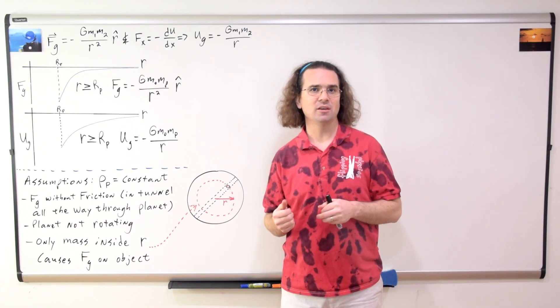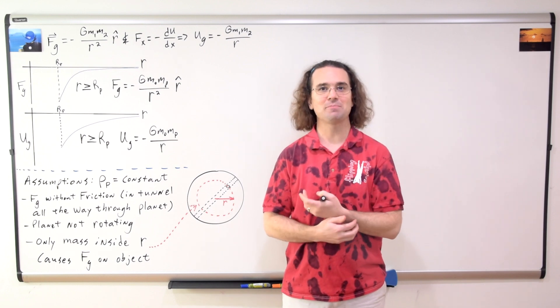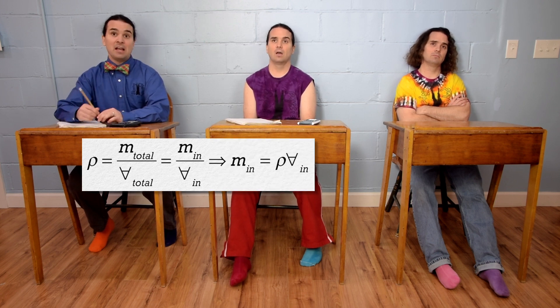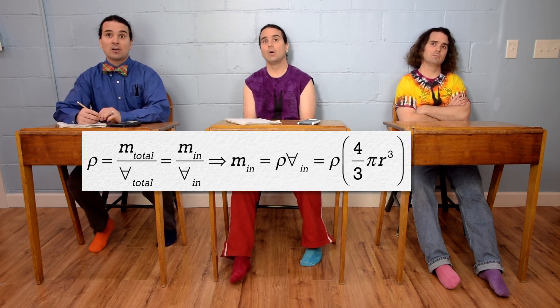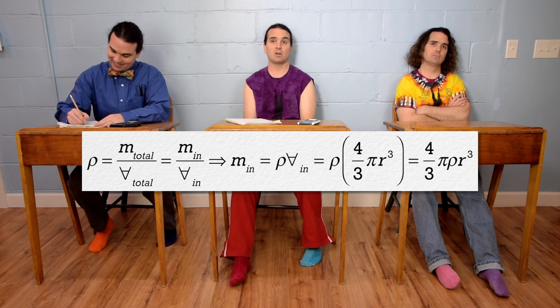Starting with the equation for density — density equals mass divided by volume — since the planet has constant density, it equals the mass inside r divided by the volume inside r. Solving for the mass inside r, and using the volume of a sphere as four-thirds pi r cubed, we get: mass inside r equals four-thirds pi times the density of the planet times r cubed.